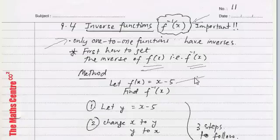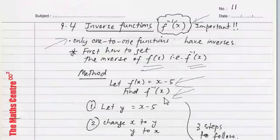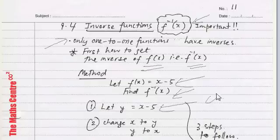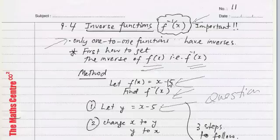So if you are given f of x is x minus 5 and you are asked to find f inverse x, there are a few steps. First step, we will let y equals to x minus 5. This follows the question. The question given is f(x) equals to x minus 5. So we will write y equals to x minus 5.